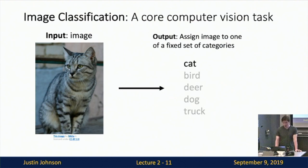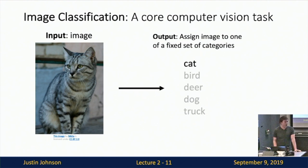Image classification is a really important core task in computer vision and machine learning more broadly. It's a simple task to state: the algorithm takes an image as input and assigns a category label to it. We typically have a fixed set of category labels — in this example, maybe five labels: cat, bird, deer, dog, and truck. The algorithm simply assigns one of these five labels to the image it sees. In this case, it's cat.